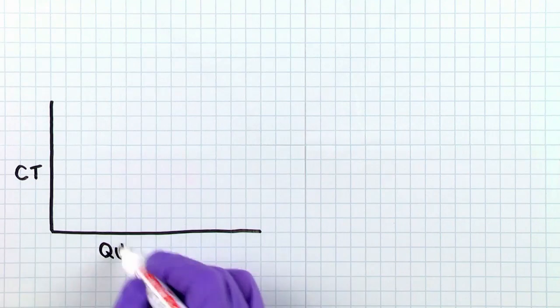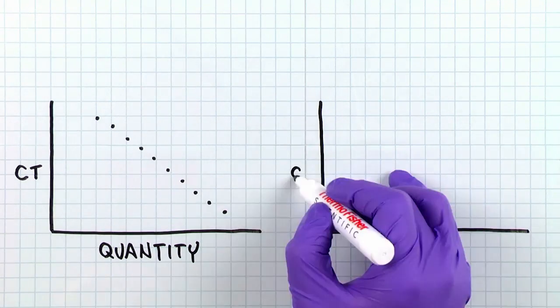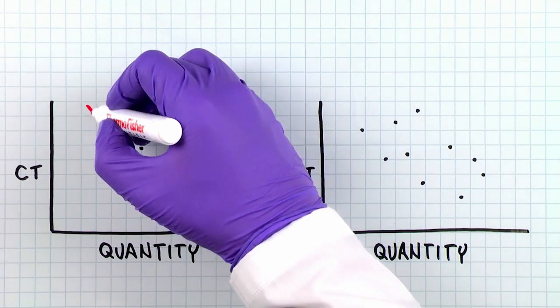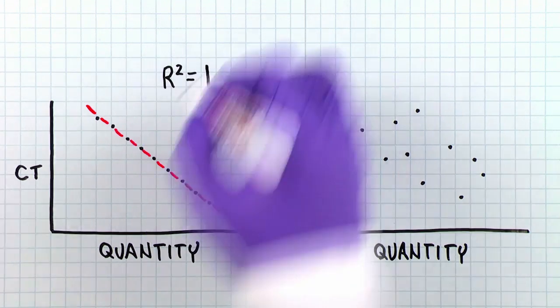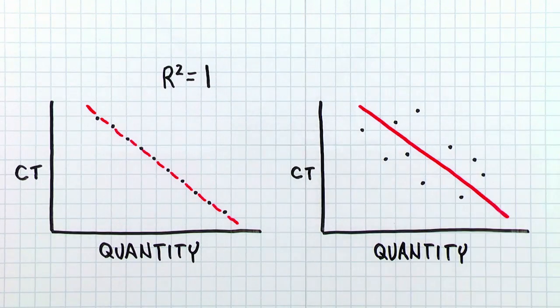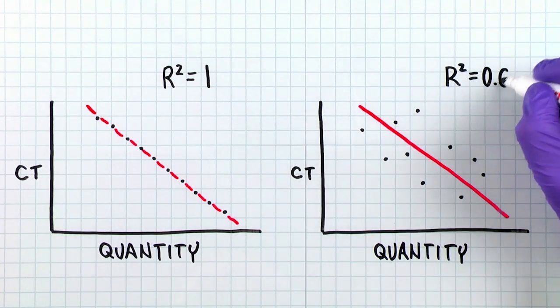The r-squared value measures how well the regression line fits the data points. A line that fits the data points perfectly has an r-squared of one. If your data points are scattered, the r-squared value for the line will be lower.